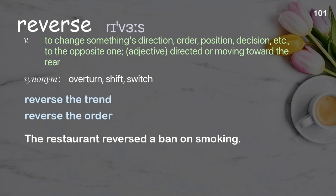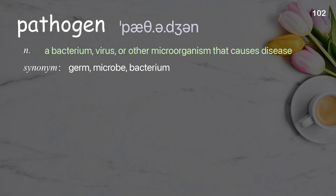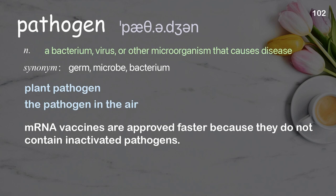Pathogen: a bacterium, virus, or other microorganism that causes disease. Examples: plant pathogen, the pathogen in the air. mRNA vaccines are approved faster because they do not contain inactivated pathogens.